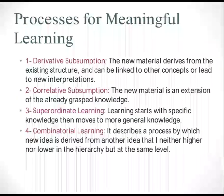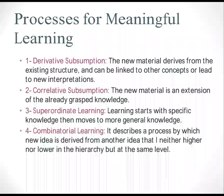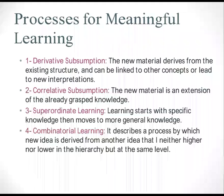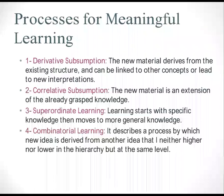Processes for meaningful learning include: first, derivative subsumption, where new material derives from existing structure and can be linked to other concepts or leads to new interpretations; second, correlative subsumption, where new material is an extension of already-grasped knowledge; third, superordinate learning, where learning starts with specific knowledge then moves to more general knowledge; and fourth, combinatorial learning, where a new idea is derived from another idea that is neither higher nor lower in the hierarchy but at the same level.